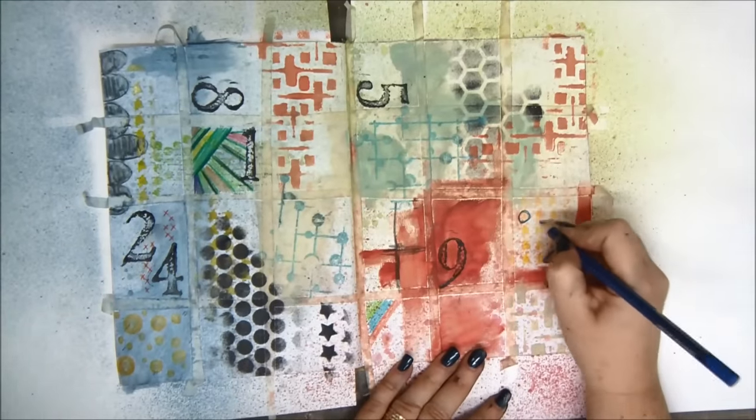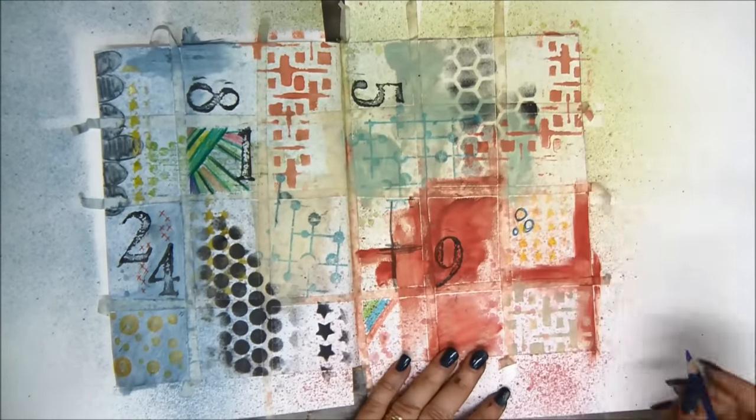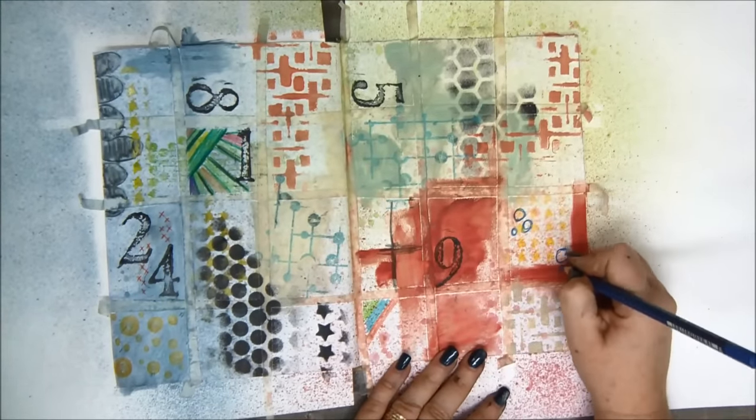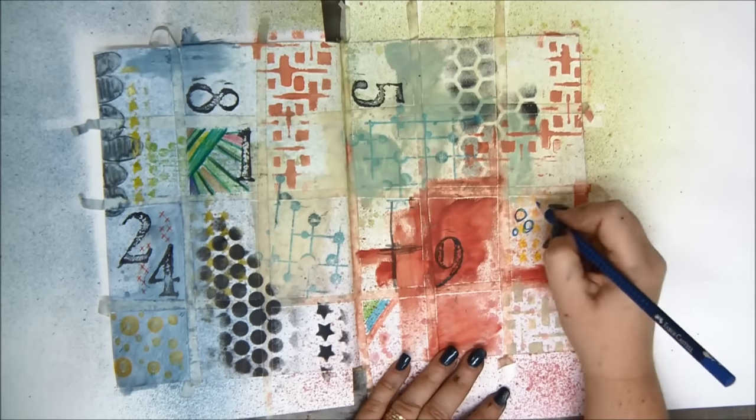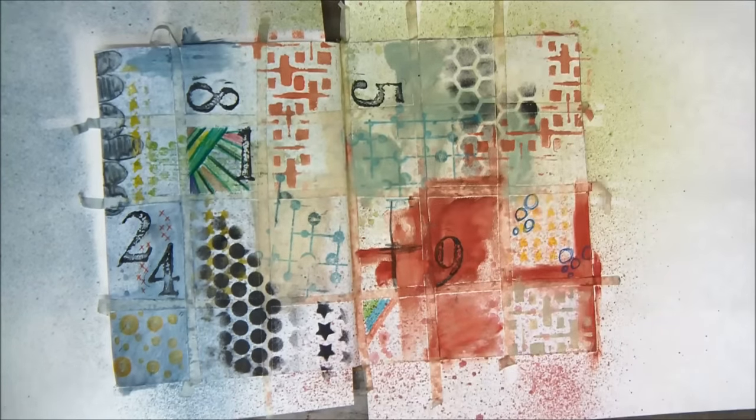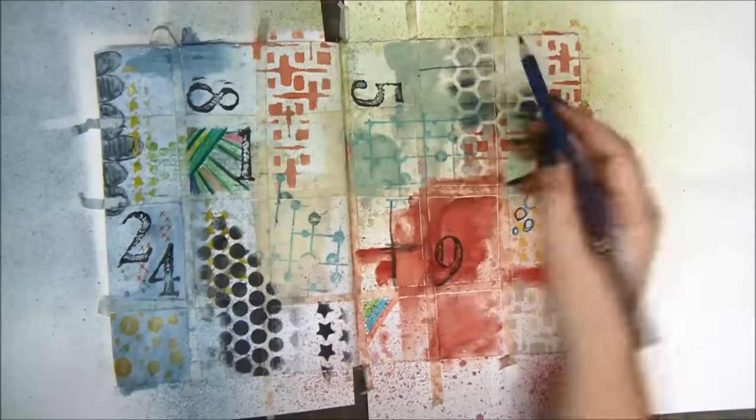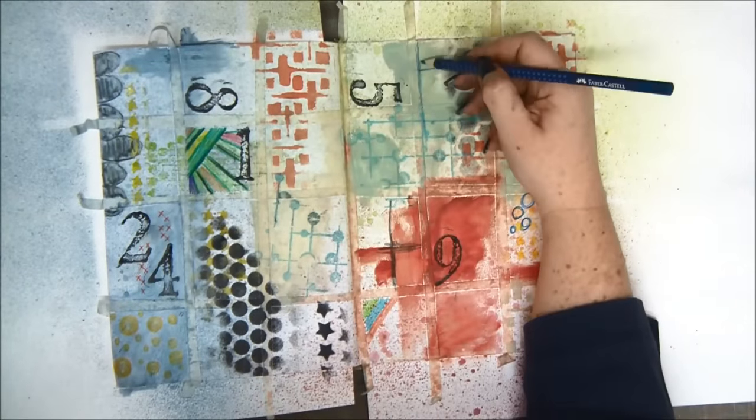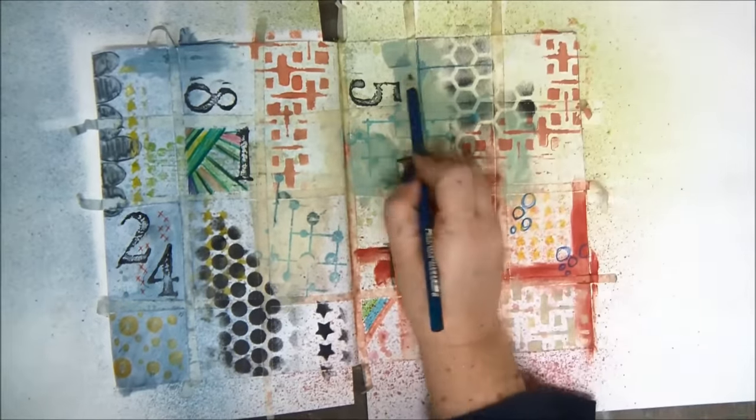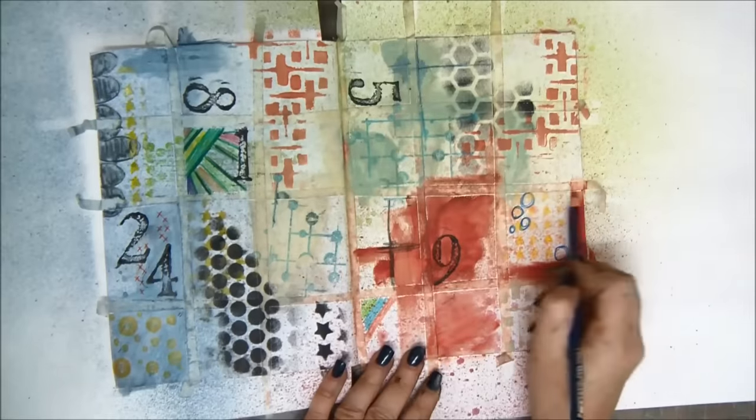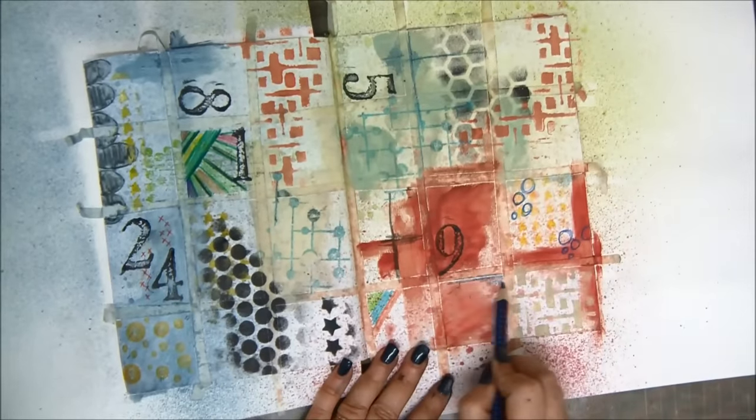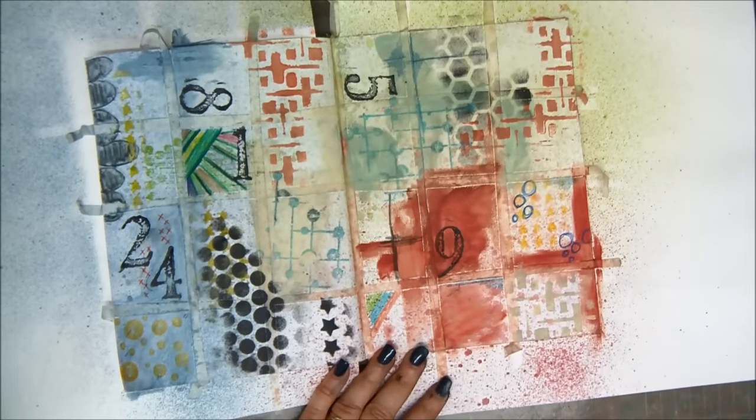Just adding some lines, some more circles. You can do this with a pen, pencil, you can skip this part all together if you're not sure and you don't like to doodle. You can add more stamping or more stenciling, I'm just adding more stuff here and there.